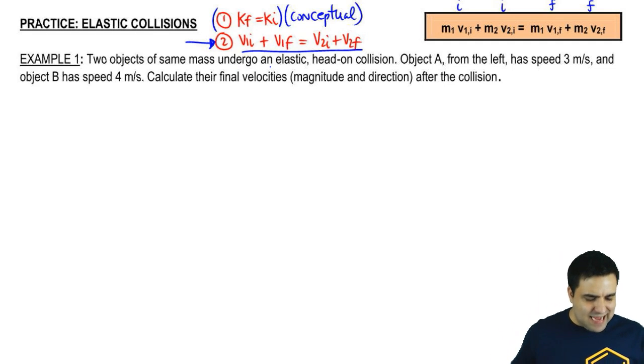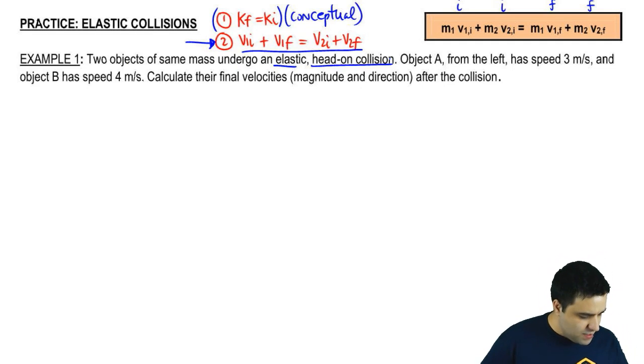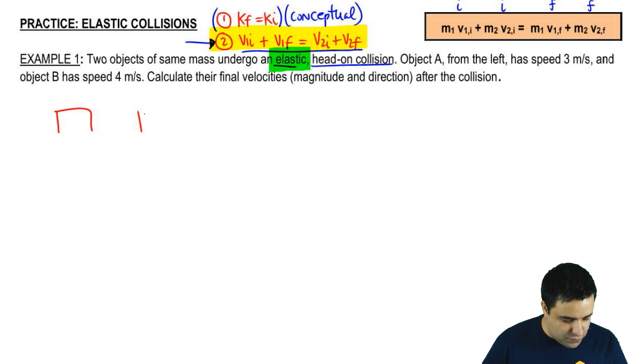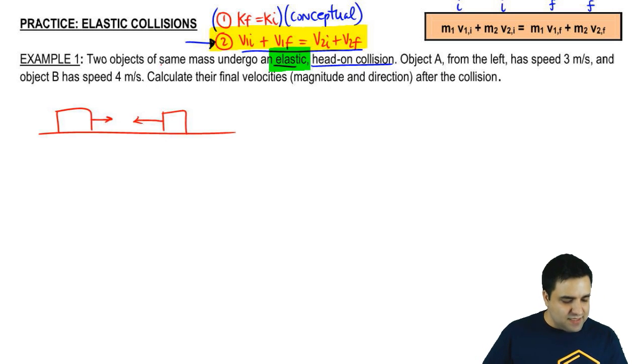Two objects of the same mass undergoing an elastic head-on collision. The reason I'm able to use the second equation in addition to the first equation is because it told me here that this is elastic. Head-on just means that they're going towards each other like this. They have the same mass. It doesn't tell me what the mass is, so I'm just going to call it M for now.